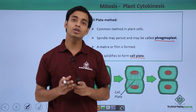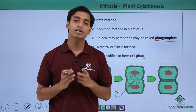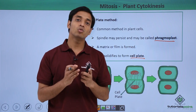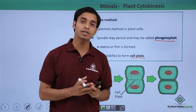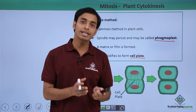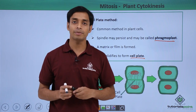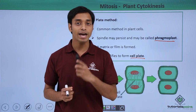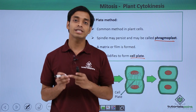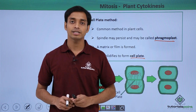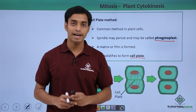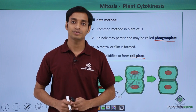In this video we have talked about the process of cytokinesis — what it is, how it happens, and two different types: one occurring in animal cells and the other in plant cells. I hope you have understood and liked this video. Thank you.